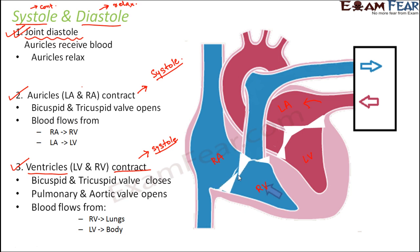Once the tricuspid valve closes, the pulmonary valve will open up. Once the pulmonary valve opens, blood flows from the right ventricle to the lungs — and this is deoxygenated blood going to the lungs. A similar process happens on the left-hand side as well.